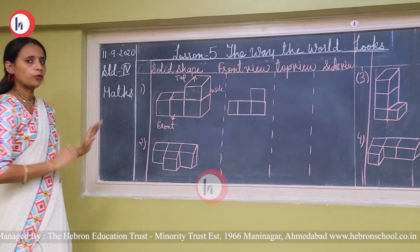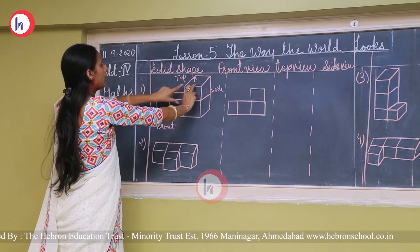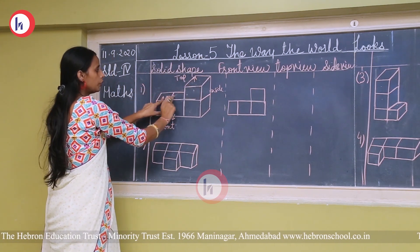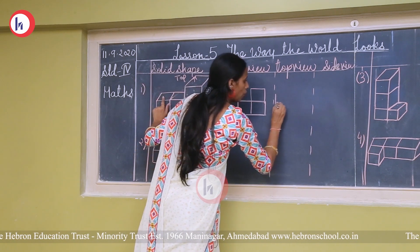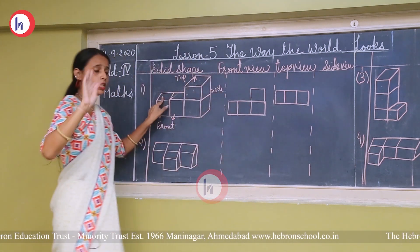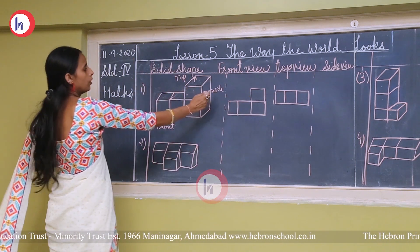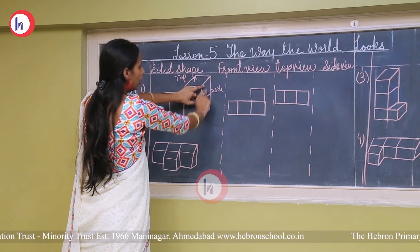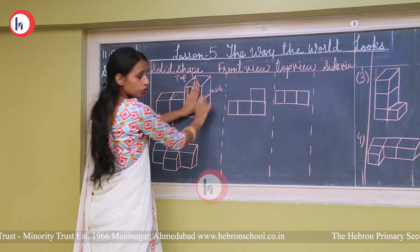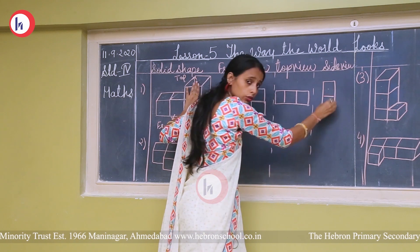Then the top view: I have to imagine that if I get on top, how would I see this shape? I can see 1 square, then this one and this one — 3 squares in a row. So whenever I draw the top view, I will draw 3 squares. And for the side view: if I see from the side, only 1 and 2 squares are there. I can only see that portion, so I draw 2 squares.